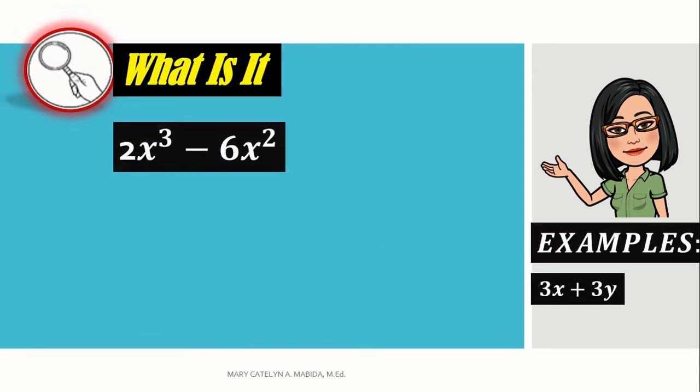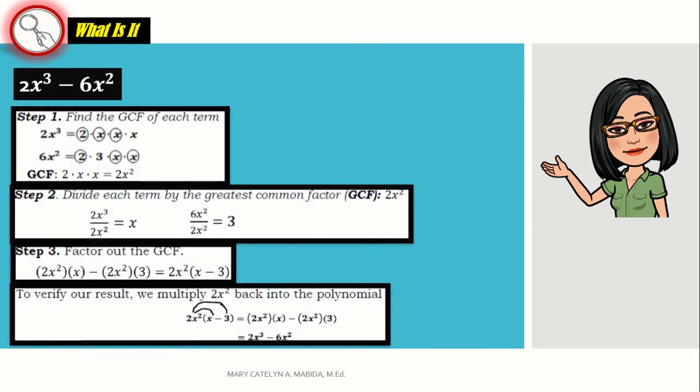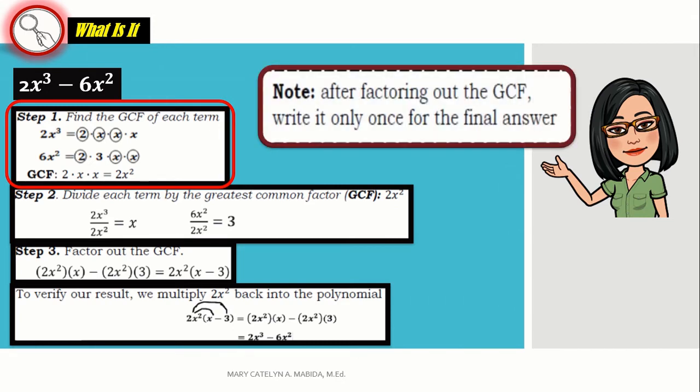Let's go to example number 2. 2x cubed minus 6x squared. Step 1. Find the GCF of each term. Again, note that after factoring the GCF, write it only once for the final answer. So, the factors of 2x cubed are 2 times x times x times x and 6x squared are 2 times 3 times x times x.